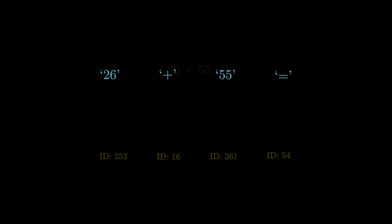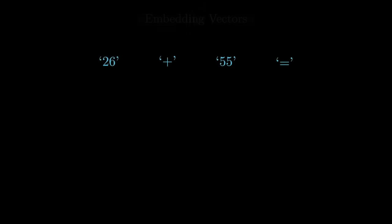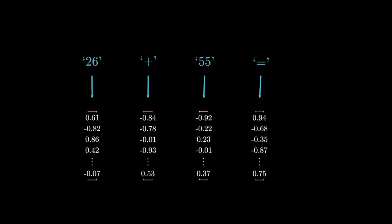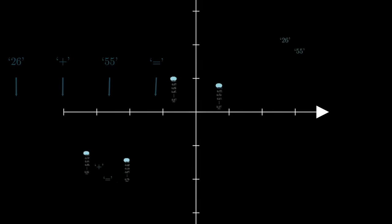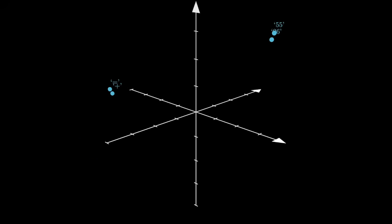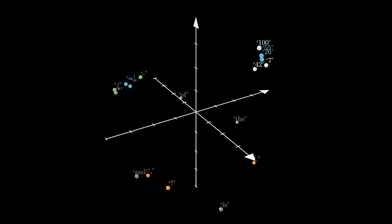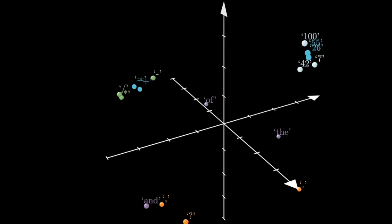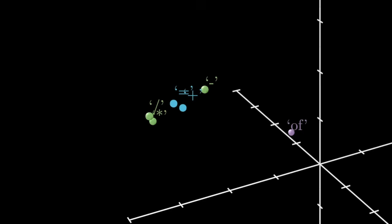These IDs are then mapped to a high-dimensional vector, let's say 768 dimensions for smaller models. These vectors live in the very same high-dimensional space as every other word or symbol. So far, each vector only carries the local meaning of its token. 26 and 55 are numbers, while the plus sign and the equal sign are operators.